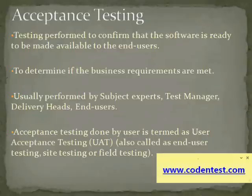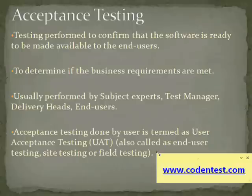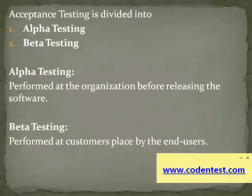Acceptance testing done by the user is termed as user acceptance testing, or UAT. UAT is also called end user testing, site testing, or field testing. Acceptance testing is divided into alpha testing and beta testing.